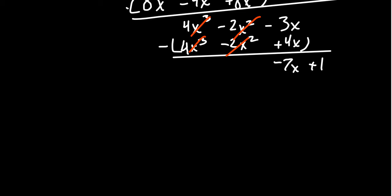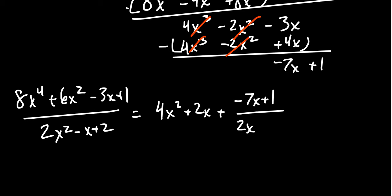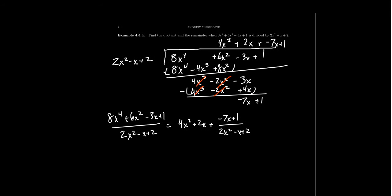Writing this as a mixed polynomial: 8x to the 4th plus 6x squared minus 3x plus 1 all over 2x squared minus x plus 2 equals 4x squared plus 2x plus the remainder negative 7x plus 1 over the divisor 2x squared minus x plus 2. This gives us examples of polynomial long division — very similar to integer long division, done step by step. It's a recursive algorithm: each time you find a part of the quotient, subtract that multiple from the dividend until you shrink down to something too small, which is the remainder.